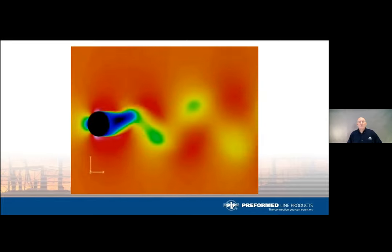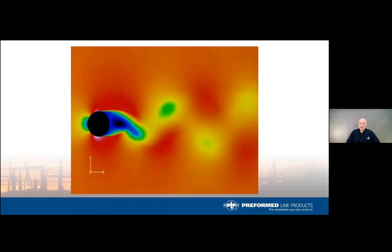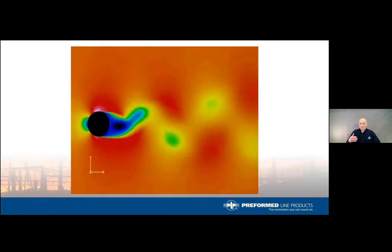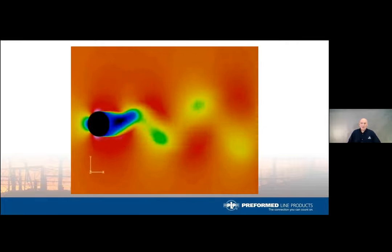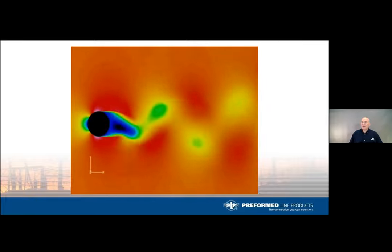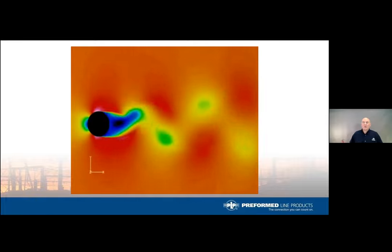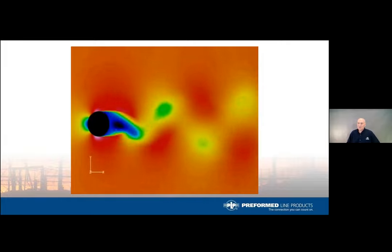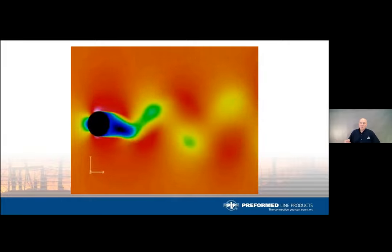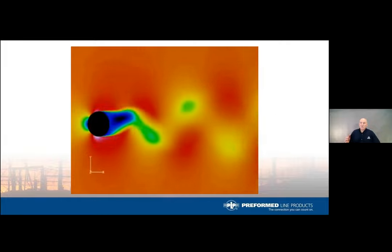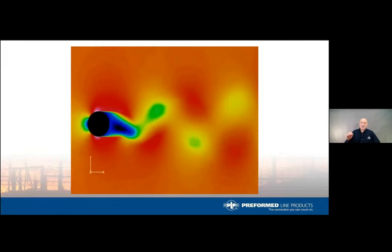Looking at a computerized model of air blowing across a conductor, it illustrates the oscillating low-pressure areas that occur above and below the conductor. In aeolian vibration, when the conductor hits a natural frequency, it wants to move towards these areas of low pressure.